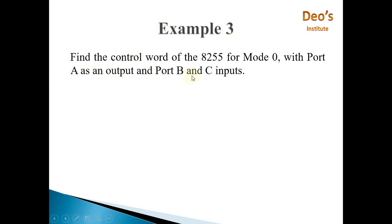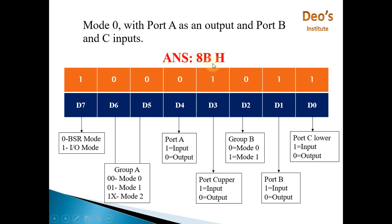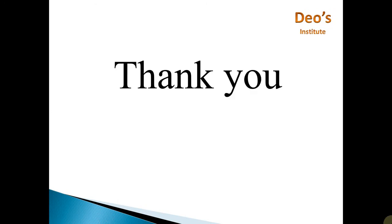Last example: Find the control word of 8255 for mode 0 with port A as output port and port B and C as input. Mode 0 means D6 and D5 are zero-zero. Port A is output so D4 is zero. Port C upper is input so D3 is one. Group B is mode 0 and port B is input so D1 is one. Port C lower is also input so D0 is one. The final answer is 0x8B.